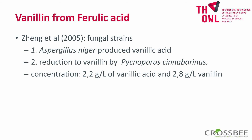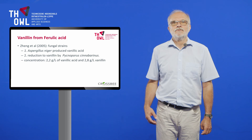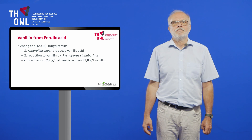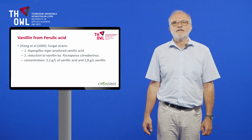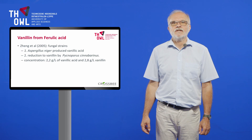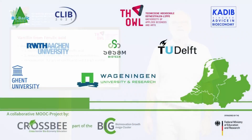Tseng et al. published in 2005 a method using two fungal strains. In the first step, a strain of Aspergillus niger produced vanillic acid, which was then, in the second step, reduced to vanillin by a strain of Pycnoporus cinnabarinus. Only 2.2 g of vanillic acid was obtained in the first step. In the second step, 2.8 g of vanillin were formed.